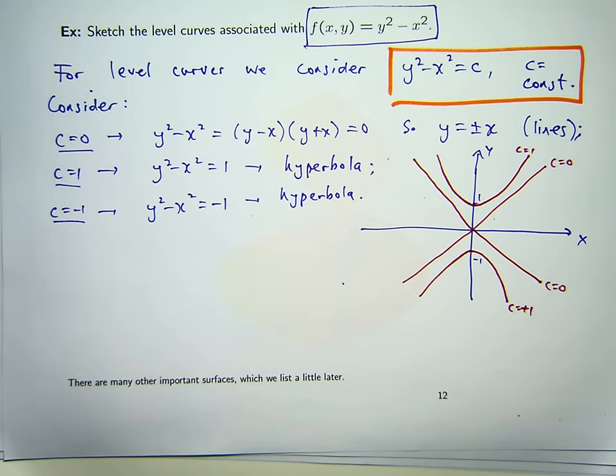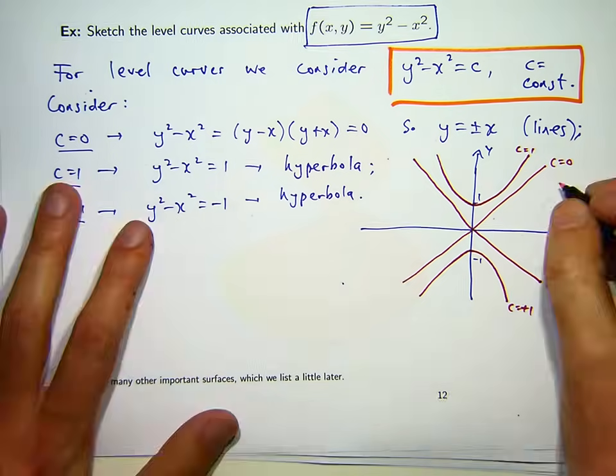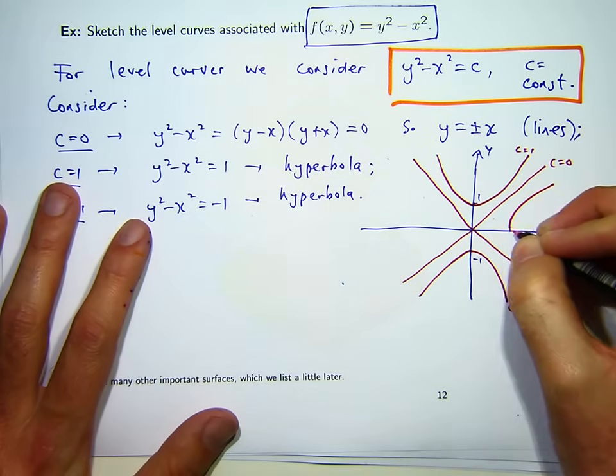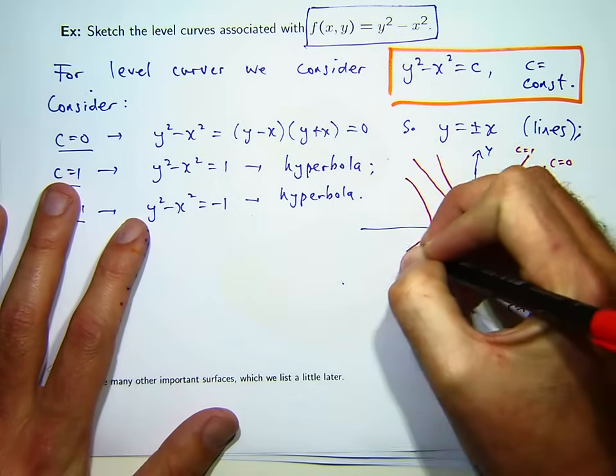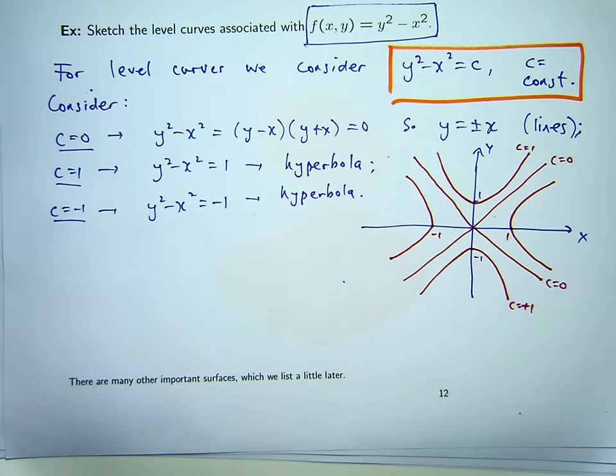What about the third case, C equals minus 1? Well, again, with a little bit of work, you can sketch the curves associated with that case as well. They just sort of intersect the x axis at 1 and negative 1. So, those curves are the curves of intersection with the surface in the plane Z equals minus 1.